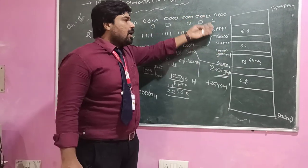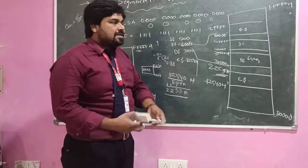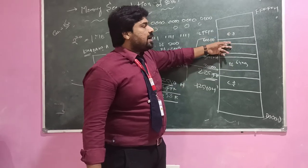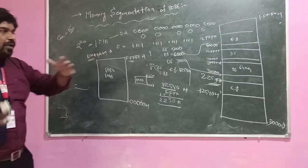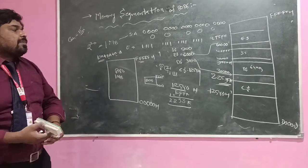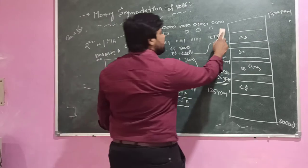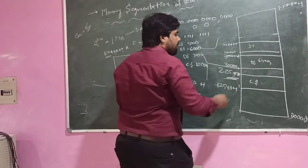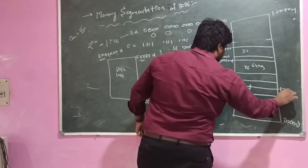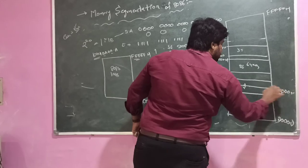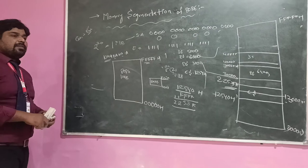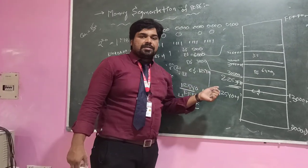These are the non-overlapping segments. If you observe, code segment, data segment, extra segment, and stack segment are declared separately — these are non-overlapping. But if you declare any one segment in between another segment, that is called an overlapping segment. For example, if an extra segment starts from 1 to 13000H in between the code segment, then the segmentation is known as overlapping segmentation. Thank you.